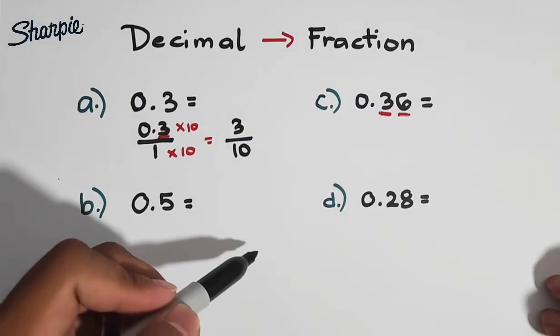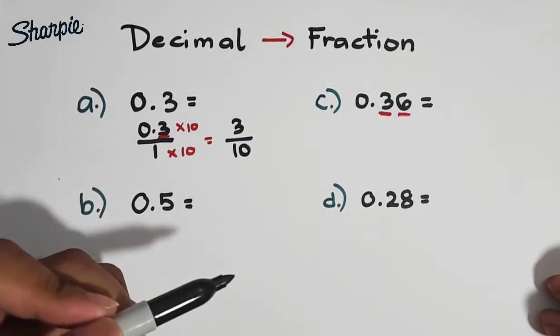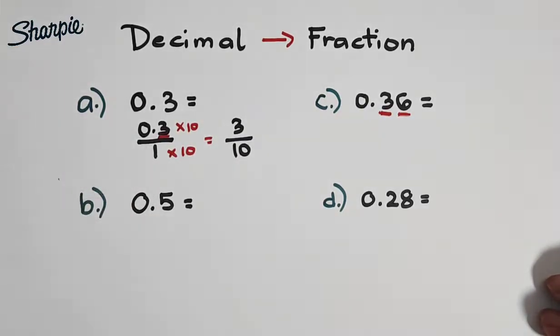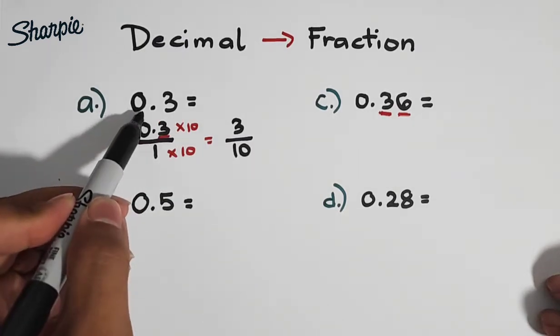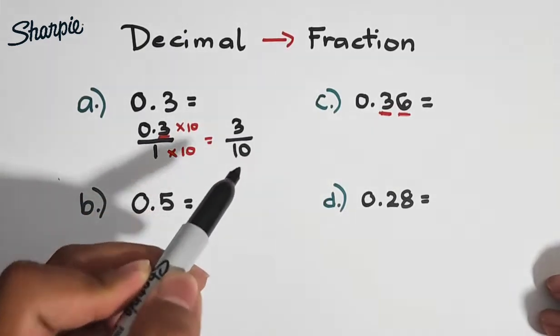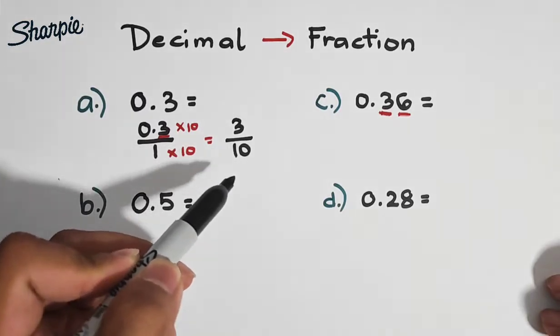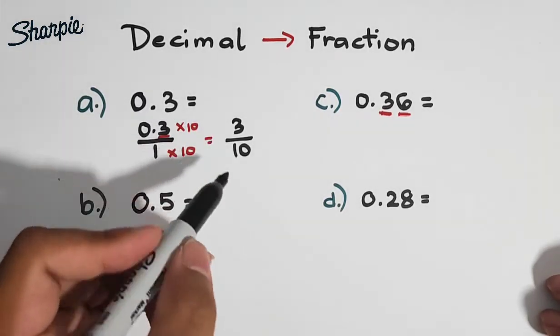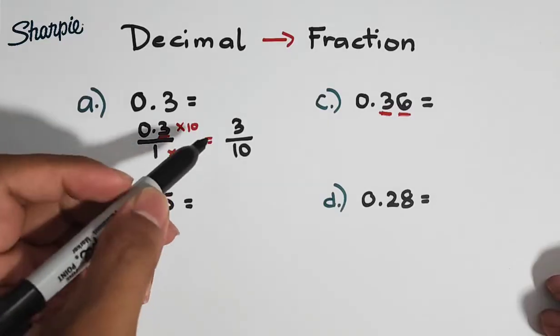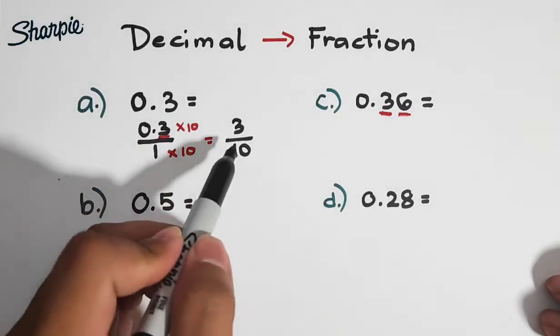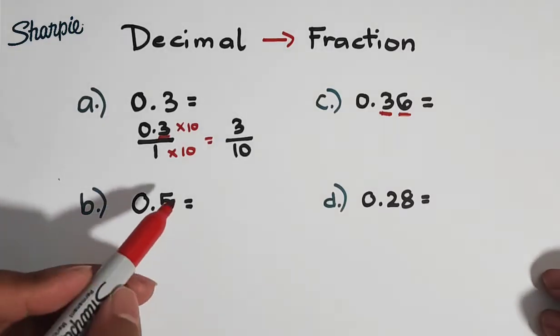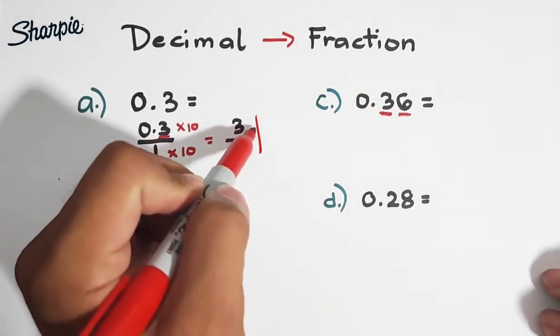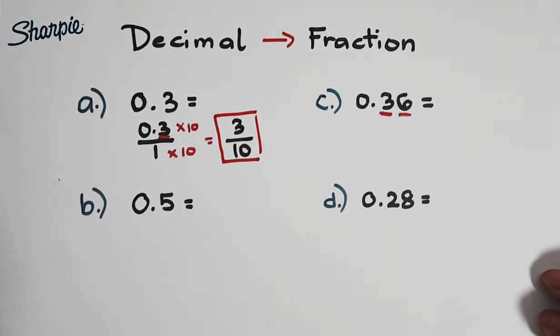And as you can see, we already have a fraction. Pero siyempre, since we're converting or we are expressing our decimal value to a fractional value, we need to check whether your fraction is already in simplest form or in lowest terms. But in this case, 3 over 10 is already in lowest terms. Therefore, we can consider this as our answer. So, 3 over 10.